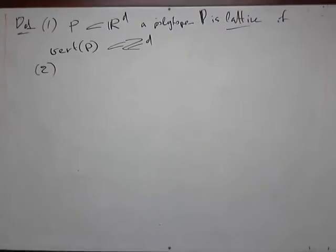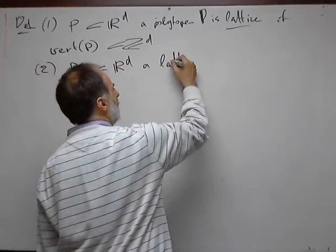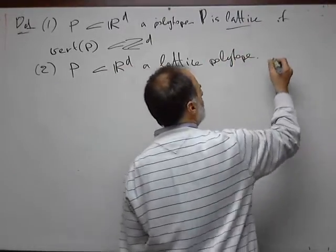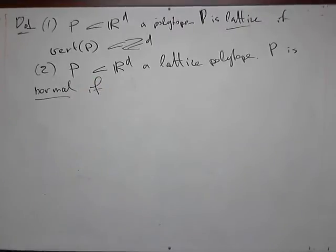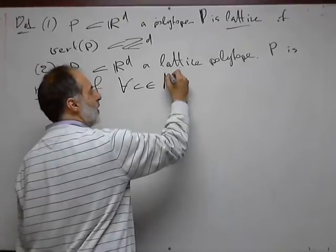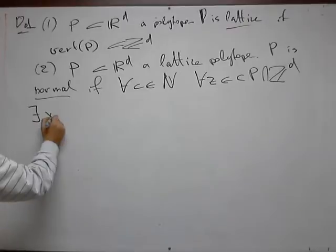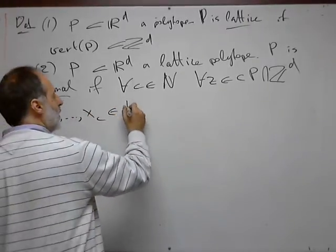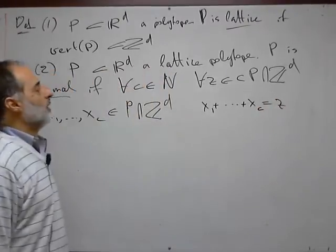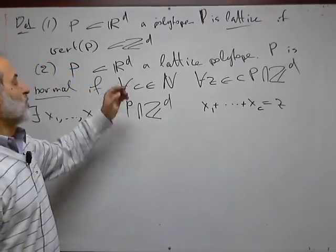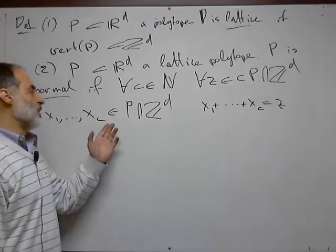And the central definition of normal polytopes. So P, a lattice polytope in R to the d, is called normal if the following condition is satisfied: for any natural number c and any integer point z in c times P, there exist c lattice points in P whose sum equals z. Here, the sum is understood in the usual additive structure on R to the power d. And repetitions are allowed. We must have repetitions for c large, larger than the number of lattice points in P.